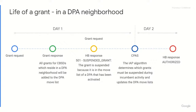During CPAS the SASS will determine whether the grant causes interference to these DPAs. If it determines that it does not, then the SASS will move this grant off those DPA move lists. In the first heartbeat response after CPAS, if the grant is no longer on a move list of an activated DPA, the device will be authorized to transmit.